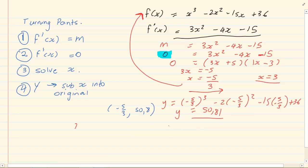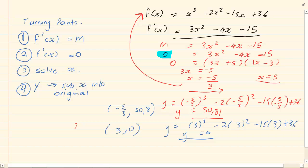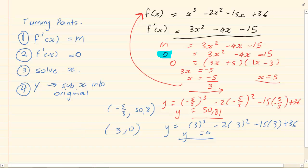For the second x value: y is equal to 3 cubed minus 2 times 3 squared minus 15 times 3 plus 36. y is equal to 0. So my second coordinate is 3 and 0. What we've done is we've got the two turning points.